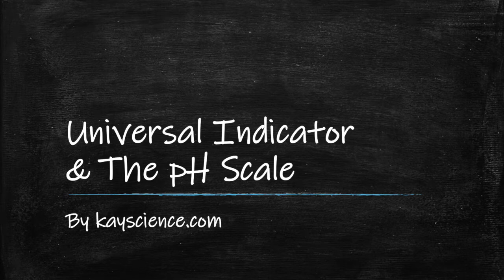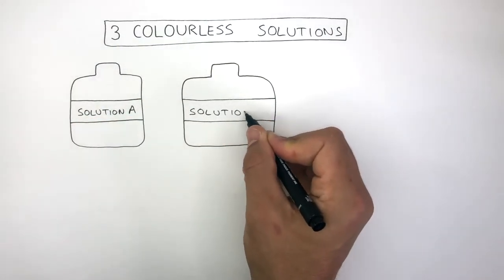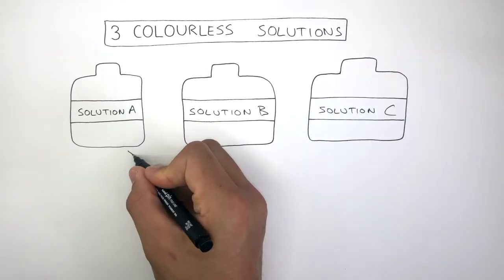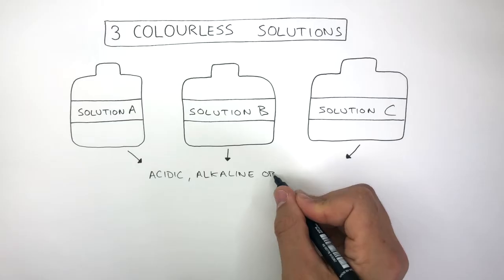Universal Indicator and the pH Scale by kscience.com. Imagine you have three colourless solutions: solution A, solution B, and solution C. How do you know which one is acidic, alkaline, or neutral?